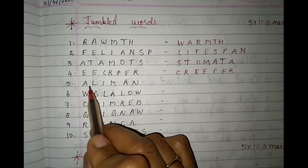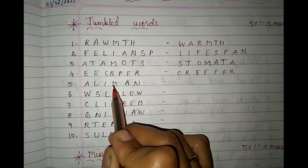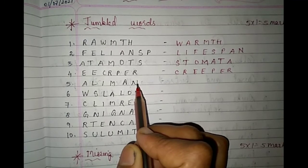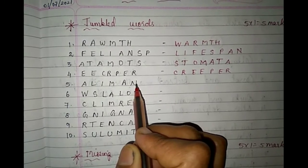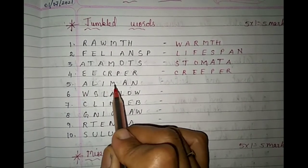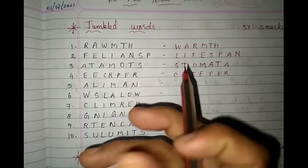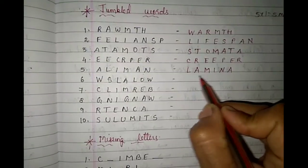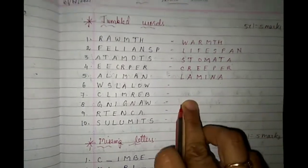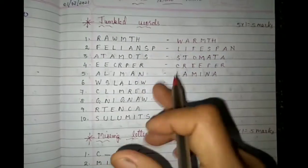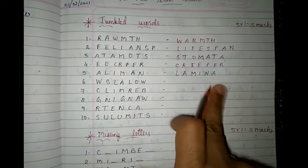Fifth one: A-L-I-M-A-N. What could it be? Two words are interchanged: L-A-M-I-N-A. What does it become? Lamina — that is, the leaf blade. It is the broad upper part of the leaf.